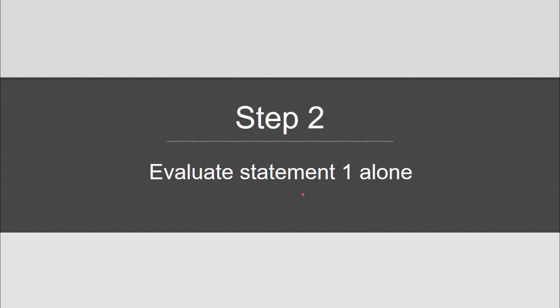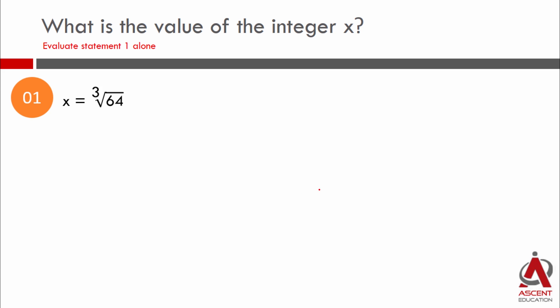Let's evaluate statement 1 alone. Statement 1 says x equals the cube root of 64. The cube root is positive - note that the cube root of a negative number would be negative. So if x equals the cube root of 64, this means x equals 4, which is a unique value.